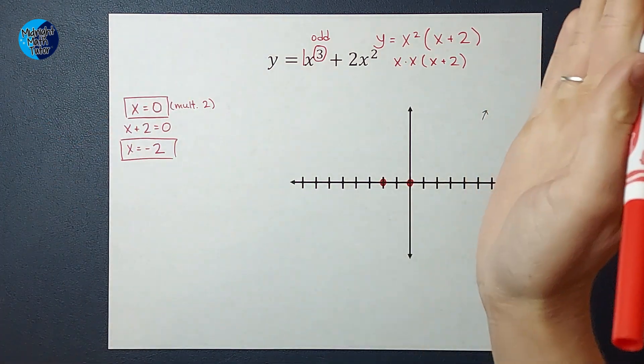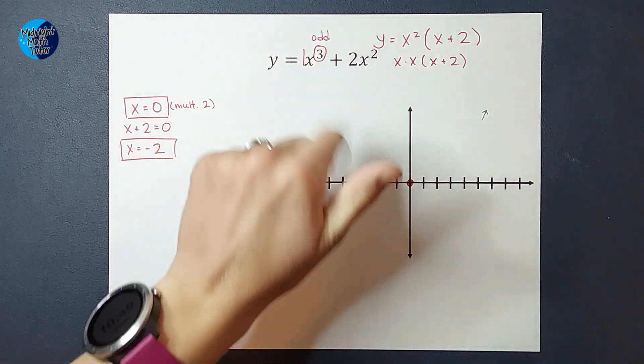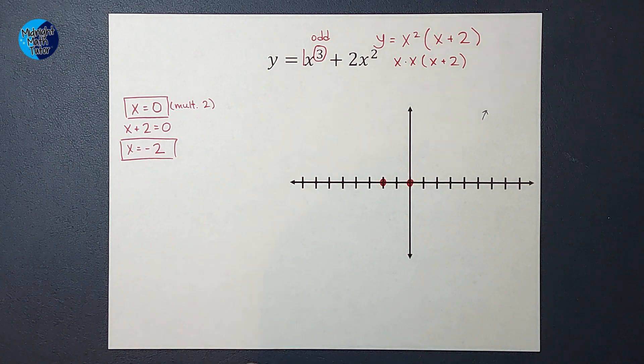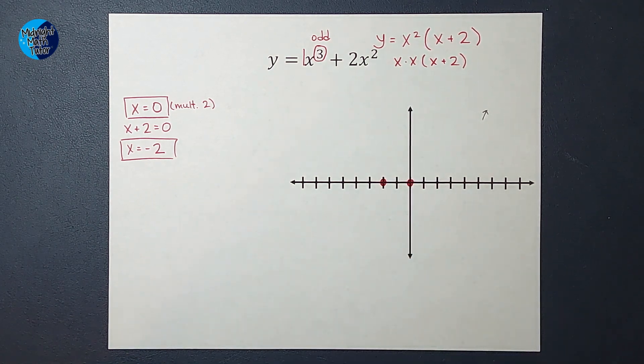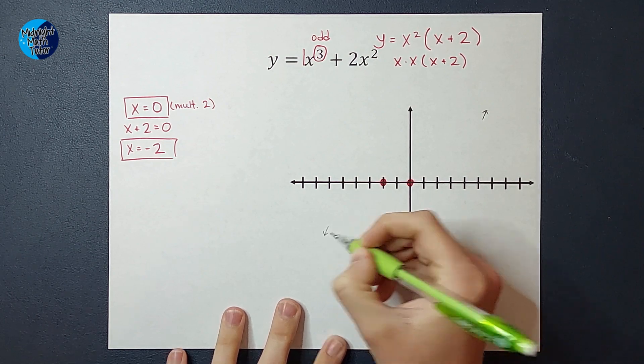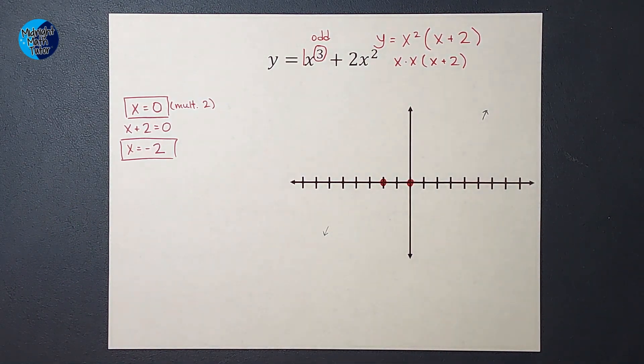But my degree is odd, so that means the left side of my graph is going to go down. And I'm putting a little pencil mark to remind myself of that. Now all I need to know is does the line go through here, what does it do? That is where step three, my multiplicities, come in.